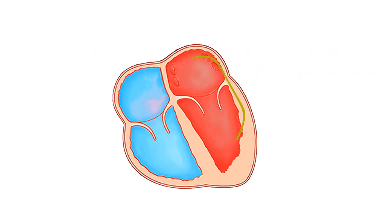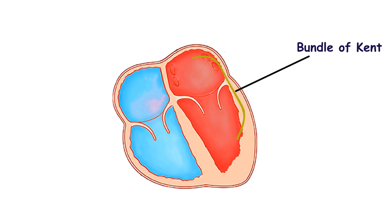Wolff-Parkinson-White syndrome is characterized by a functioning accessory pathway that communicates between the atria and ventricles in addition to the atrioventricular node. Such an accessory pathway is called the bundle of Kent.